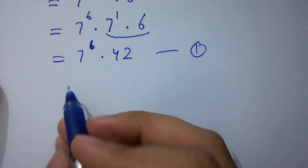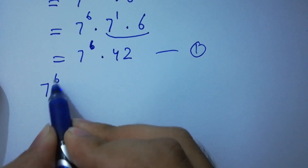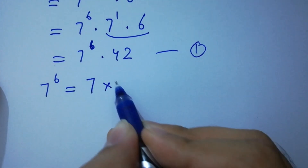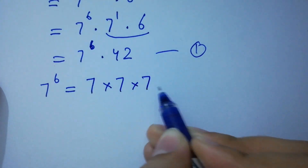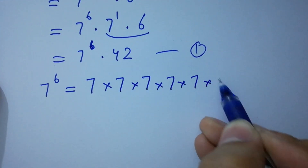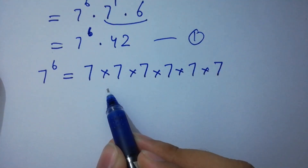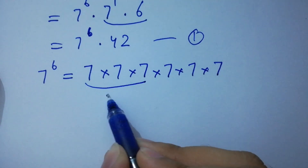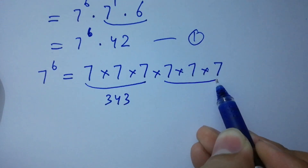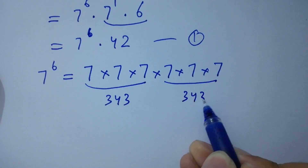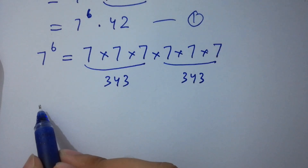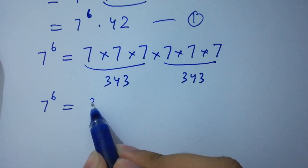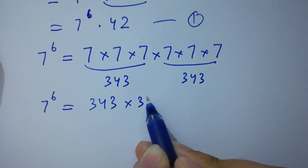First of all I'm going to solve 7 to the power 6, which equals 6 factors of 7. We have 7 times 7 is 49, 49 times 7 is 343, and also 343. So 7 to the power 6 equals 343 times 343.